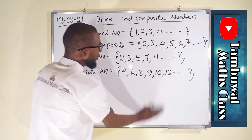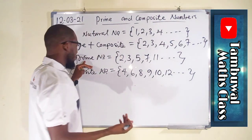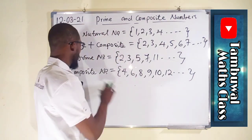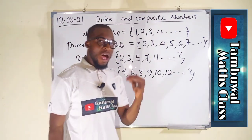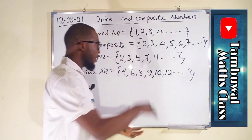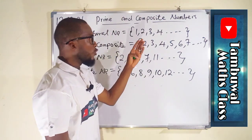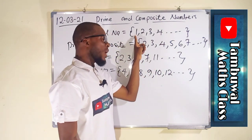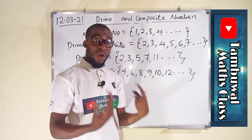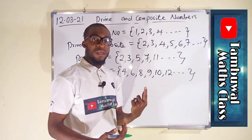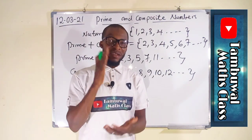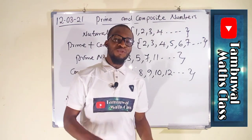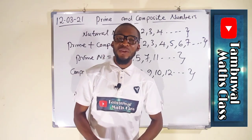So the difference between them — let me repeat: prime numbers have only two factors, composite numbers have more than two factors. If you combine them together you obtain natural numbers greater than one, because one has only one factor, which is one. This is an assignment for your kids — let them write down all the prime numbers and composite numbers between one and two hundred. Thank you for watching. Do have a nice day.